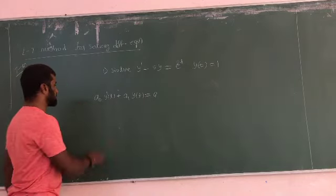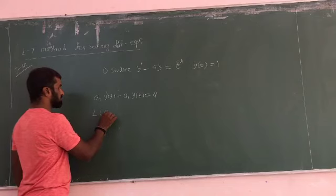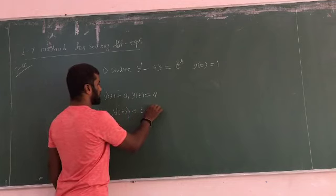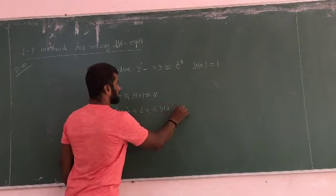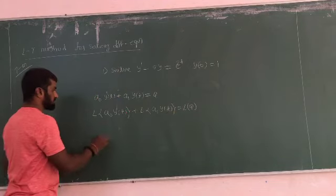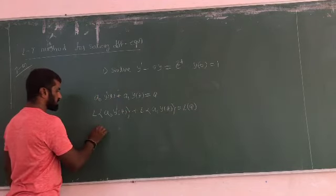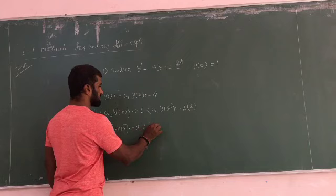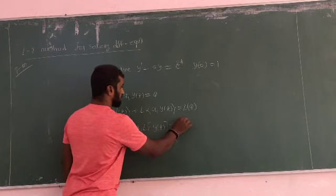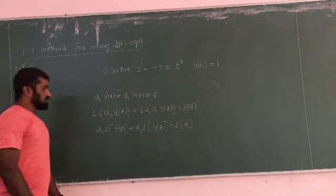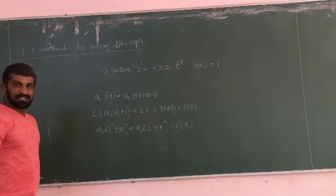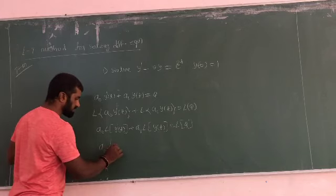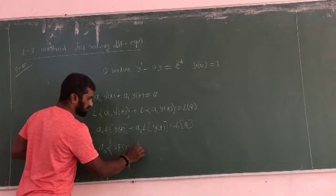Step 2: Apply Laplace on both sides. Take the Laplace of A-naught times y'(t) plus A1 times y(t), all equal to the Laplace of Q. The Laplace of y'(t) uses the first order derivative formula.